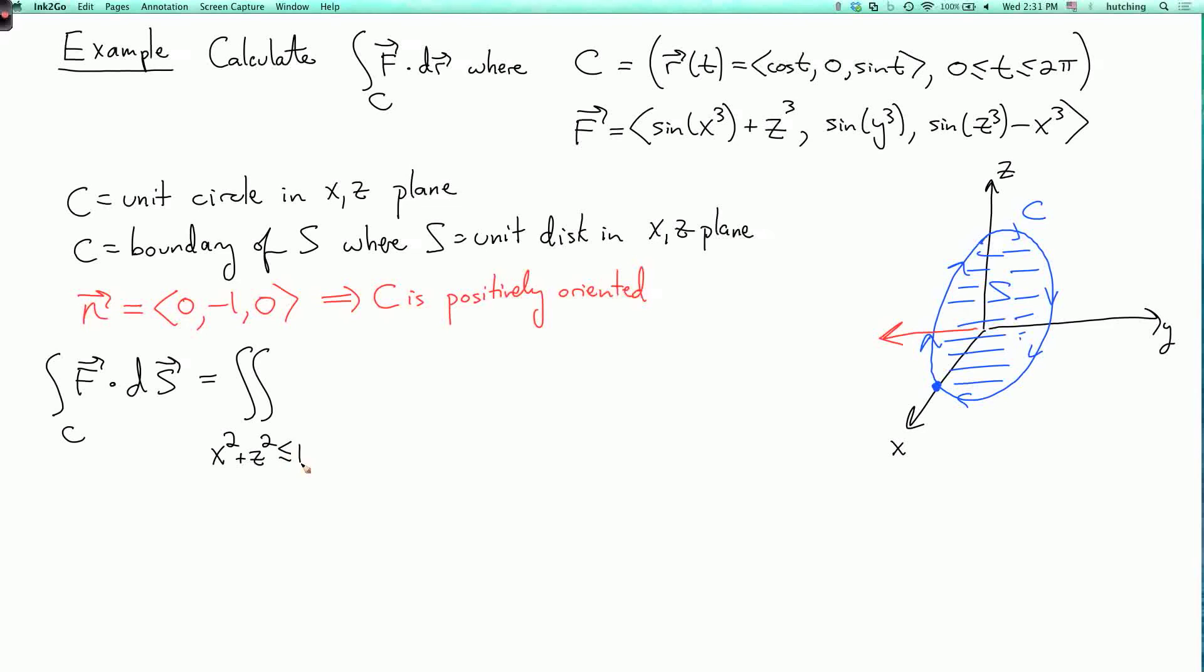So it's the double integral over the region where x² + z² ≤ 1 of the curl of f, so del cross f dot (0, -1, 0) dA. Now what's the curl of f? Let's evaluate this.